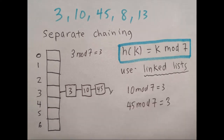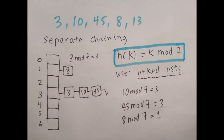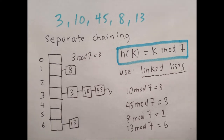Then we do 45 mod 7, which also equals 3, and we continue building the linked list. Next we encounter 8: 8 mod 7 is 1, so we put 8 at index 1. And finally 13 mod 7 is 6, so we put that at index 6.